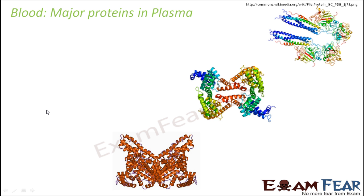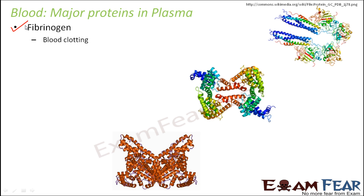Now some of the important proteins which are present in blood plasma — let's quickly look at their names and what they do. In plasma, one important protein is fibrinogen, which helps in blood clotting. When you get hurt, it starts bleeding from that place, but after some time the bleeding stops because the blood has formed a clot there, and that clot blocks further flow of blood. So in that blood clot formation, this particular protein present in plasma also contributes.